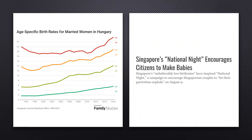Hungary is one example. Their prime minister has announced scholarships for university students who promise to stay in the country, offered citizenship to ethnic Hungarians living abroad, and exempted women with four or more children from paying income tax. Part of Hungary's low population issue is significant emigration — many people are leaving the country.